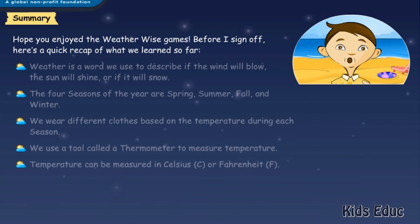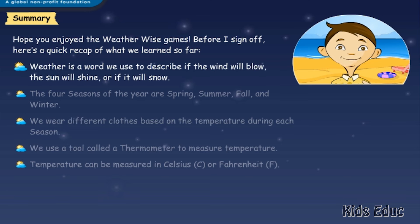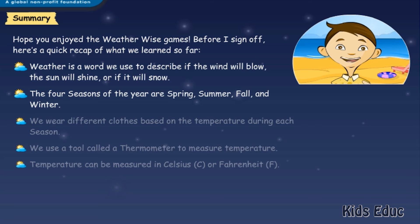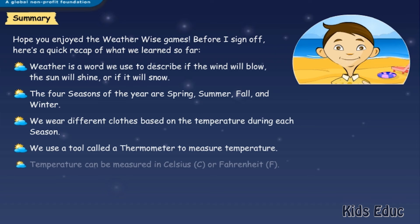Hope you enjoyed the weather-wise games. Before I sign off, here's a quick recap of what we've learned so far. Weather is a word we use to describe if the wind will blow, the sun will shine, or if it will snow. The four seasons of the year are spring, summer, fall, and winter. We wear different clothes based on the temperature during each season. We use a tool called a thermometer to measure temperature. Temperature can be measured in Celsius or Fahrenheit.